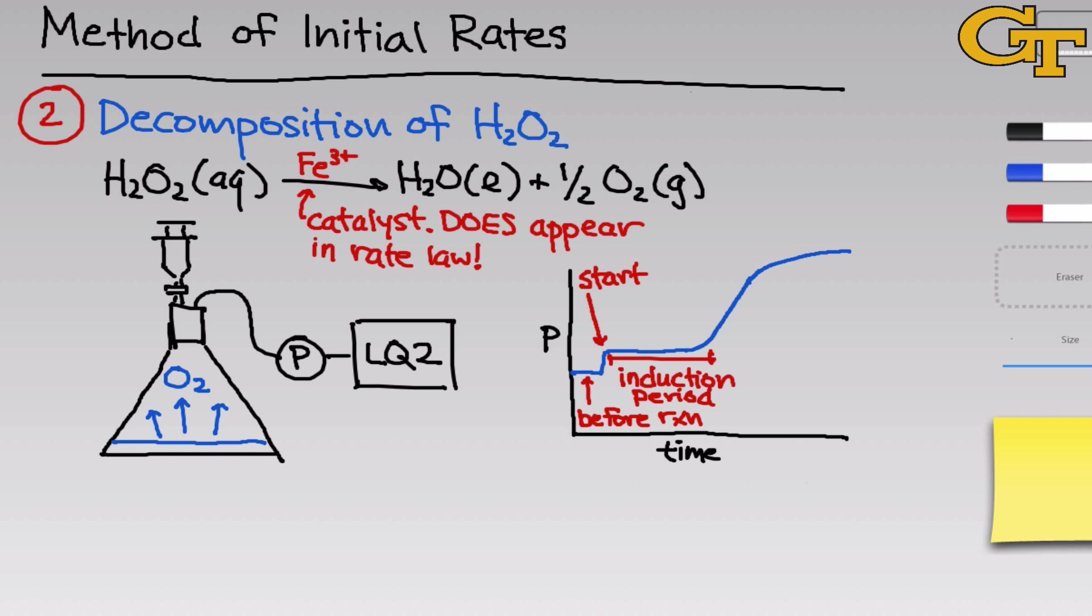In the induction period, a step is happening that doesn't lead to products necessarily, but is part of the mechanism en route to products. After that induction period, though, you'll notice a linear region, a region of the pressure versus time curve, where things seem to be increasing linearly, and this is where we're going to get our initial rate. The slope of this linear region is more or less proportional to the initial rate. In order to determine the orders, we're going to need to run the reaction multiple times and obtain multiple curves at different initial molarities of H2O2 and Fe3+.